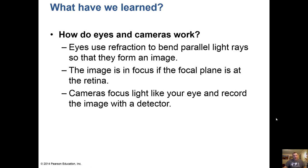Most pictures in astronomy are actually black and white and then color-enhanced. To summarize: eyes use refraction to bend parallel light rays to form an image, and if the image is in focus the focal plane is at the retina. Cameras focus light just like your eye does and record the image with a detector.